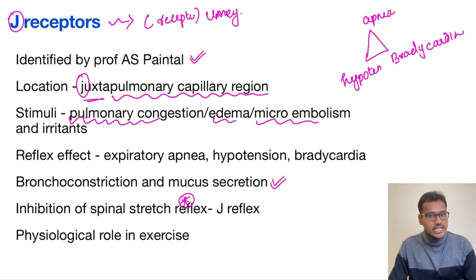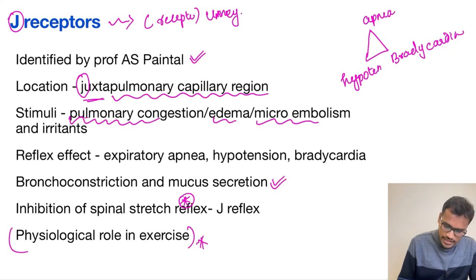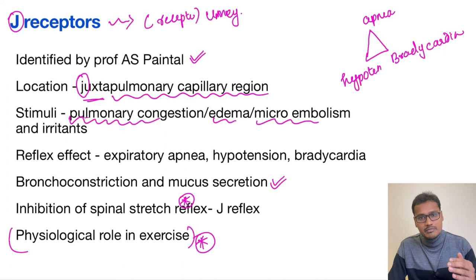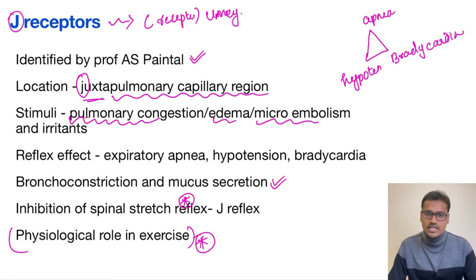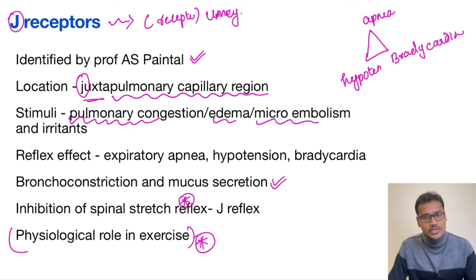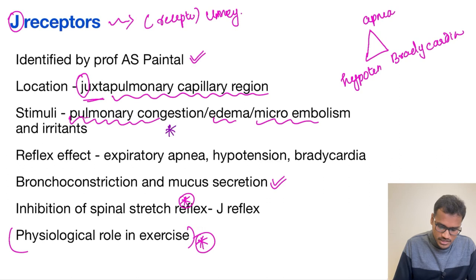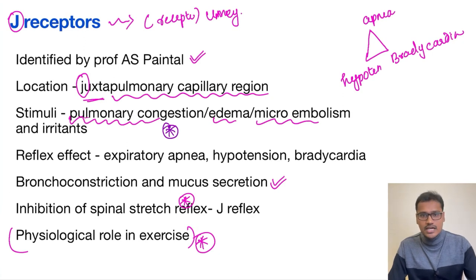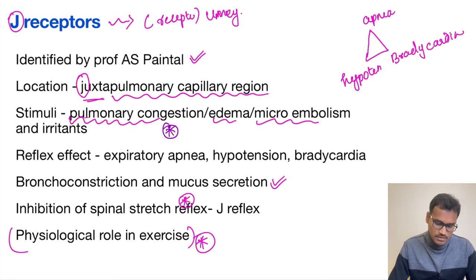Due to this, a person with pulmonary congestion will have decreased respiratory effort. This mechanism has a physiological role in exercise — when a person exerts excessively, this reflex activates, inhibits the spinal stretch reflex, causes muscle fatigue of inspiration and expiration, and prevents over-exercising. Sadly, this receptor was also activated during the Bhopal gas tragedy due to severe pulmonary congestion, inhibiting the spinal stretch reflex and preventing victims from moving to safety.